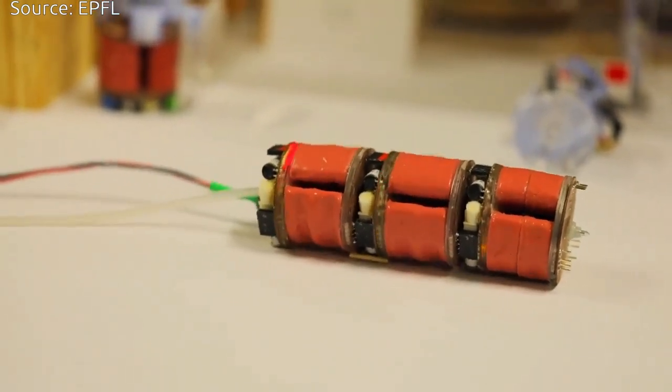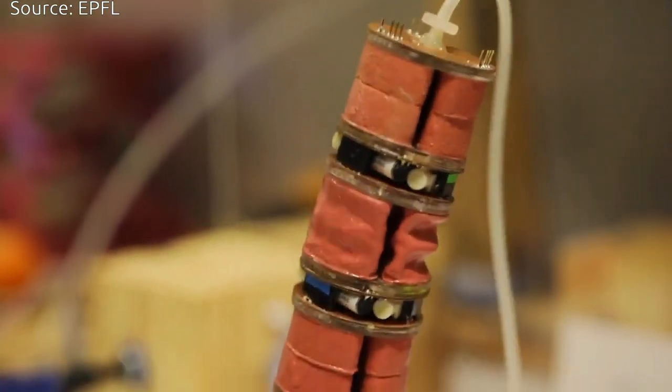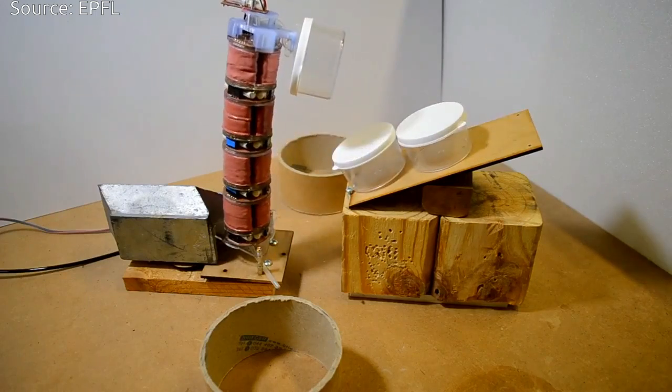The robot uses suction to grab objects or to stick to a smooth wall for climbing, so it can really achieve a wide range of tasks because of the unique properties of vacuum.